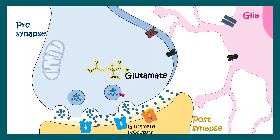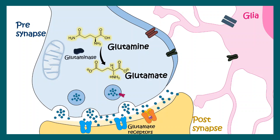Glutamate comes from glutamine. Glutamine is converted to glutamate by the help of the mitochondrial enzyme glutaminase. Glutamine is indeed supplied by the glia. So glia supply glutamine, which gets into the presynaptic terminal with specific transporters, and that gets converted to glutamate with the help of glutaminase enzyme.